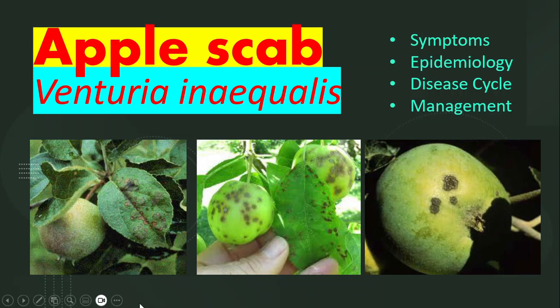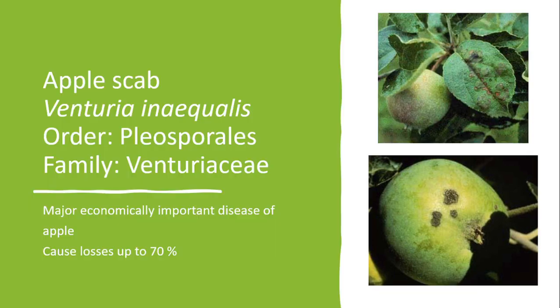Today we will talk about apple scab. Apple scab is a very important disease of apple. The causal organism is Venturia inaequalis, which belongs to the order Pleosporales and family Venturiaceae. It is a major economically important disease of apple worldwide and it causes losses up to 70% in apple.